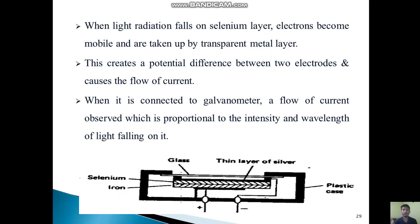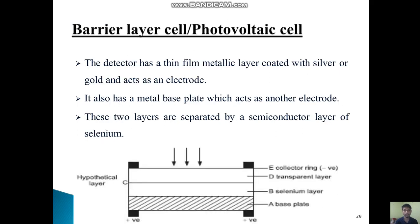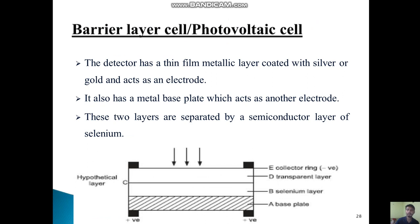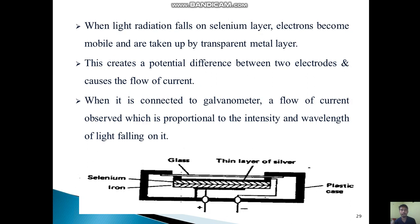When light radiation falls on the selenium layer, electrons become mobile and are taken up by the transparent metal layer, which is the layer above the selenium layer. This creates a potential difference between two electrodes and causes the flow of current.